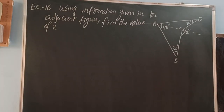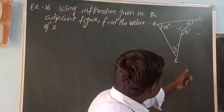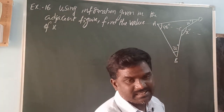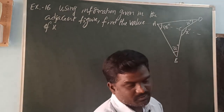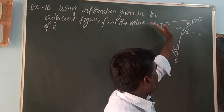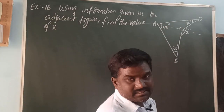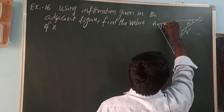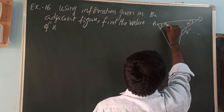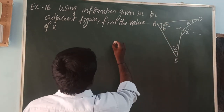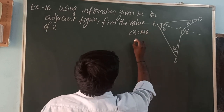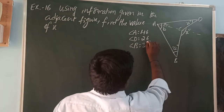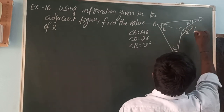Using the information given in the adjacent figure, find the value of X, where X is angle BCD, which is an exterior angle. We construct one line dividing the triangle into two triangles. This angle is divided into two parts, A and B. Given angle A is 46 degrees, angle D is 26 degrees, and angle B is 30 degrees. So X is divided into parts X1 and X2.